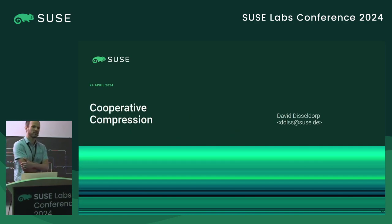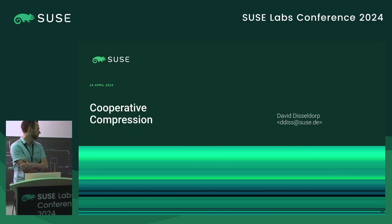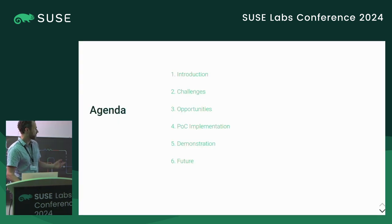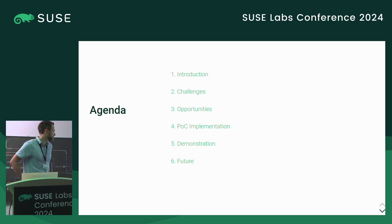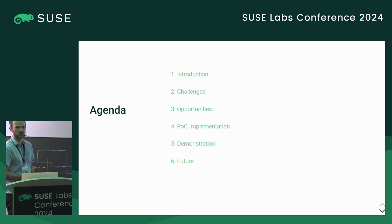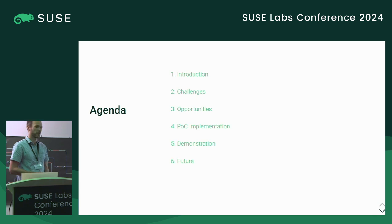My name's David Disseldorp. I'm from the SUSE Labs file systems team, and I'm here to talk about cooperative compression. I'll start off with a brief introduction to compression and how we use it currently, look at some challenges and opportunities to optimize some of the workloads we use it in. I'll do a rough demonstration of a proof-of-concept implementation I worked on, and then look at where we could take it from there.